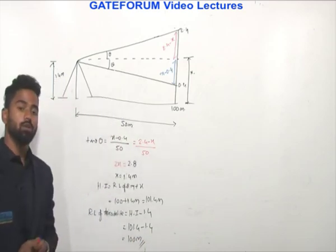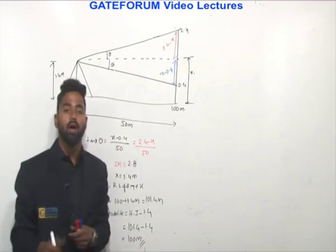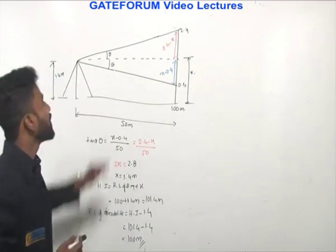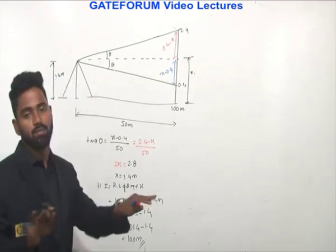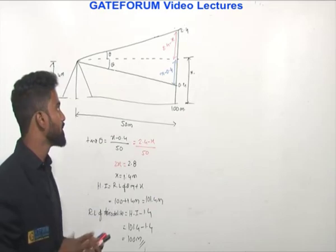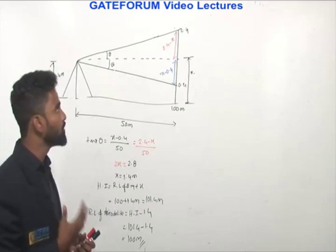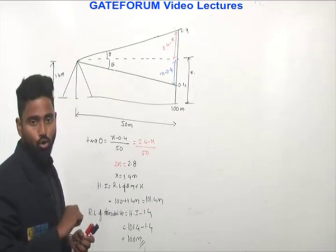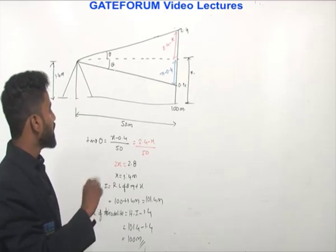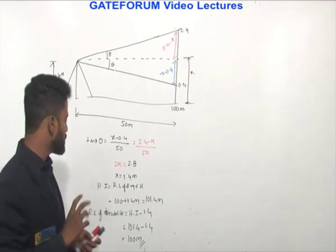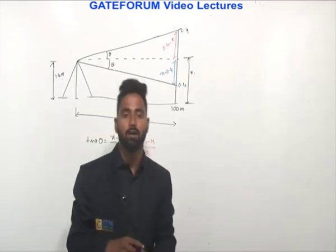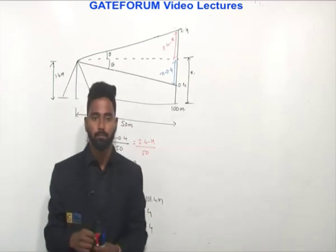This is how you calculate the RL of the theodolite station. Just draw the figure and the answer follows directly. The RL of the theodolite station is 100 meters. Thank you.